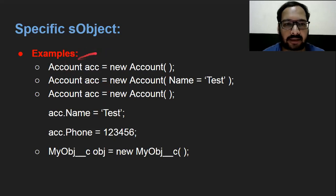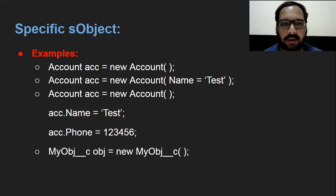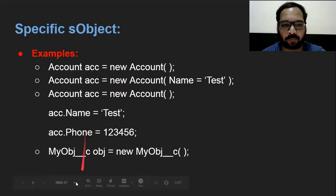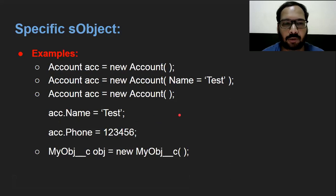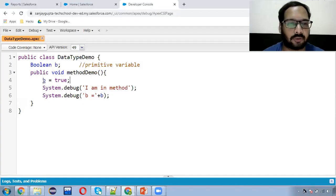Now comes SObject. SObject is very important in Salesforce because whatever we create in Salesforce stores under a particular object — we create records, and records are directly associated with objects. We have two types of objects: standard and custom. In the first line you can see a standard object variable creation, and in the last line a custom object variable creation. If you want to assign values to the fields of a particular object, you can use two notations: in parentheses you can use field name and assign values directly, or you can use the variable name like acc dot fieldName and assign the values.